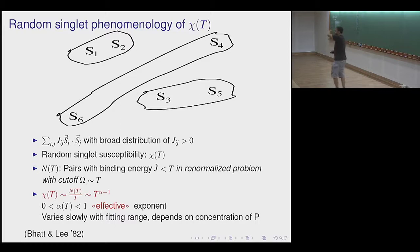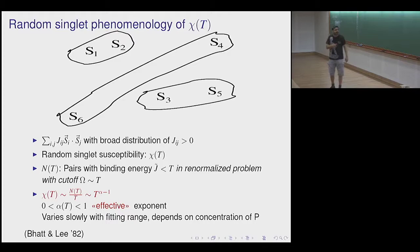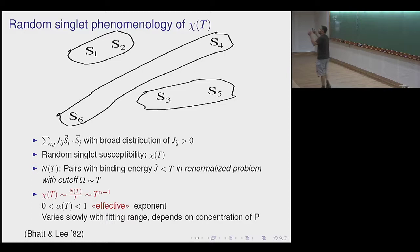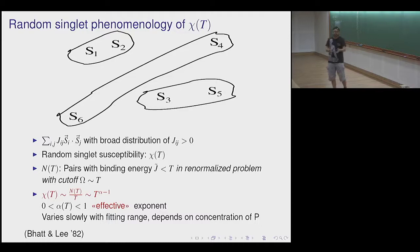What Bhatt and Lee pointed out was that when the distribution of locations is random and the exchange couplings depend exponentially on distance between magnetic moments, you have to a very good approximation an extremely broad distribution of antiferromagnetic Heisenberg exchange couplings. It makes sense to start thinking in a renormalization group picture: take the two spins with the strongest coupling, form a singlet, renormalize the remaining couplings, and iterate down to a cutoff scale equal to temperature.